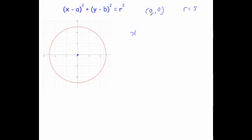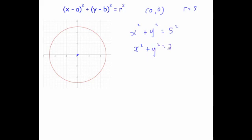So we're going to get x minus 0 squared — I'm just going to write x squared — plus y minus 0 squared — again, just y squared — equals 5 squared. So the equation of this circle is x squared plus y squared equals 5 squared, or alternatively x squared plus y squared equals 25. It can be written in either one of those two ways.